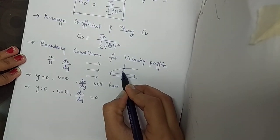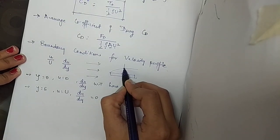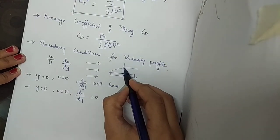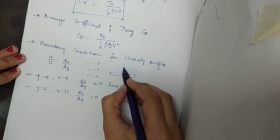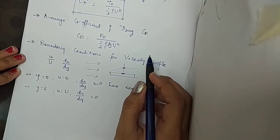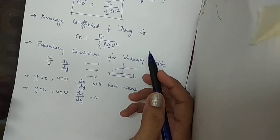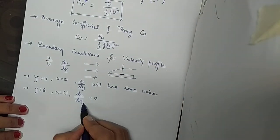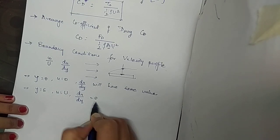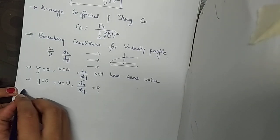From this point to that point the velocity is varying, but once we reach the free stream velocity there is no variation in the velocity. So du/dy equals 0.